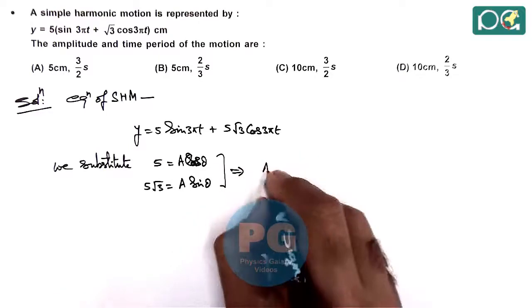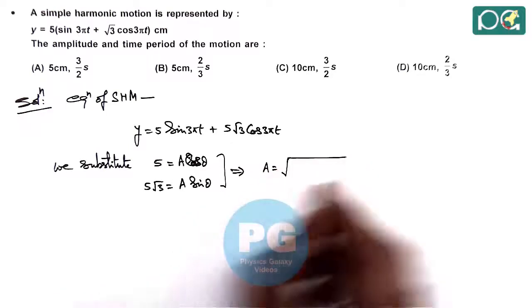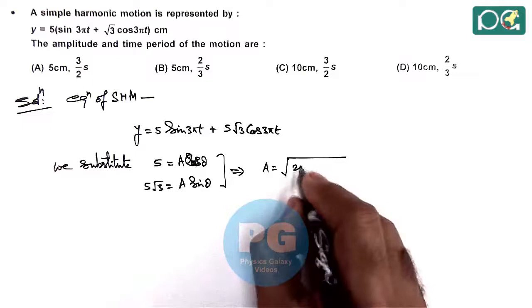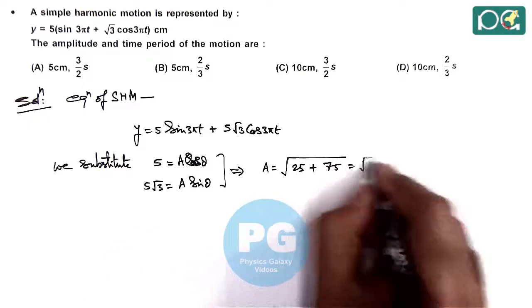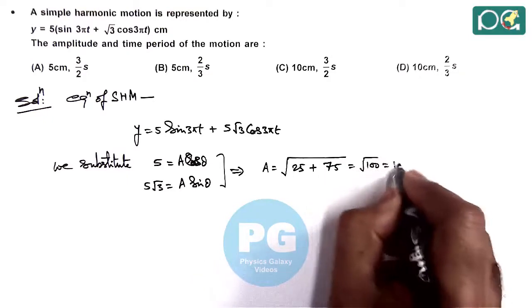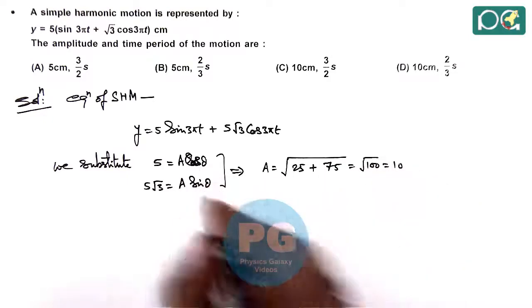So we substitute these values. Then from here we get A equals √(5² is 25 plus (5√3)² is 75), this is √100, that is 10.